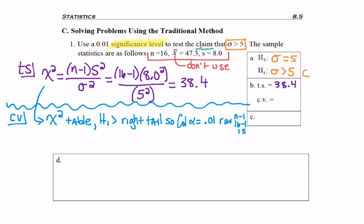Now you don't see alpha anywhere in the given question, but don't forget that significance level is the same thing as alpha. So the significance level of 0.01 means alpha is 0.01, and then row n minus 1 for degrees of freedom. So row 15. So in row 15, column 0.01, I find the value of 30.578.